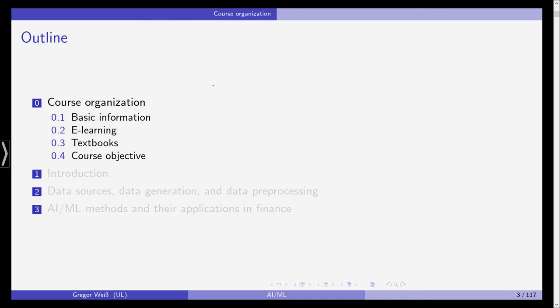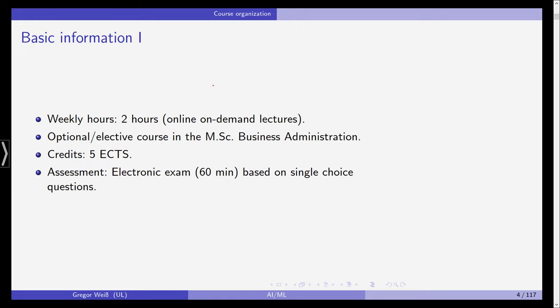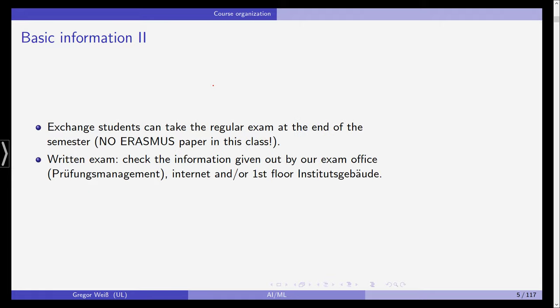And then, as I said, in the third chapter, which will be the largest part in this lecture, we will discuss various methods from artificial intelligence and machine learning and how they are applied to questions and problems in finance and financial economics. So this is the outline and we'll start directly with the course organizations and basic information. So if you're not studying this at Leipzig, you can probably skip a lot of this information. But you might be interested in, for example, the textbooks. So this is a two hours per week class. It's online and on demand via YouTube. Here at Leipzig, it's an elective class in our Master of Science in Business Administration degree. And you will get five ECTS points if you pass the final exam and the assessment will be done via an electronic exam on our ELEAS system. And it is based on single choice questions. Actually, it can also be multiple choice in some cases, but most of them will be single choice. And it will run for 60 minutes.